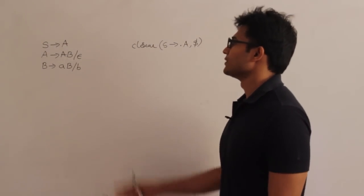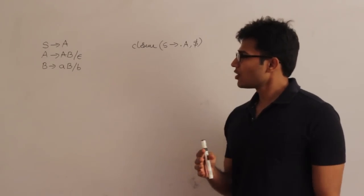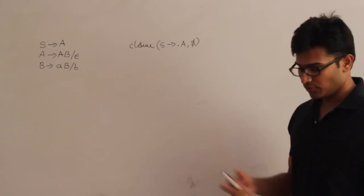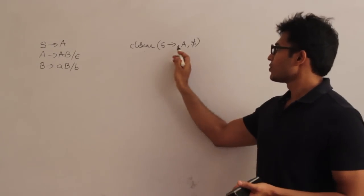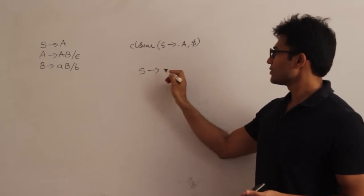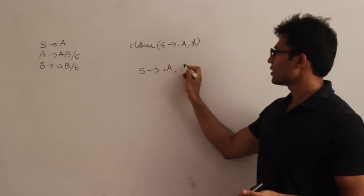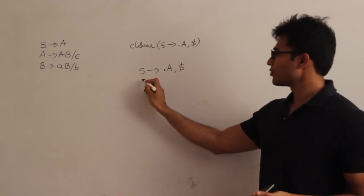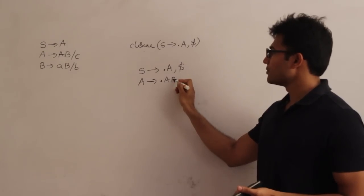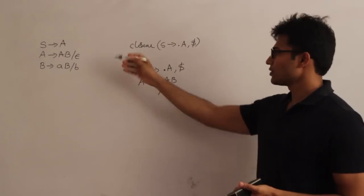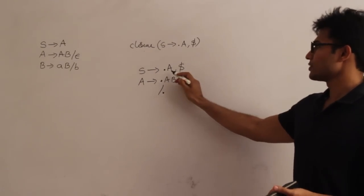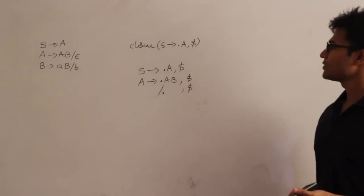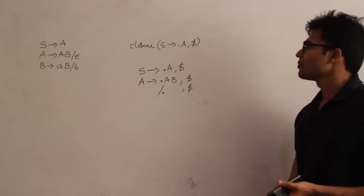There are some classes of examples where it is not just enough to add closure one. To find the closure, we always add whatever is there into the closure — dot A, comma dollar. Since there is a dot before A, we add all A productions: A derives dot AB, or A derives dot epsilon, which is just dot. The look-ahead is dollar because dollar follows that A.